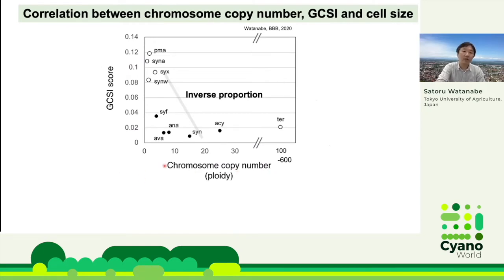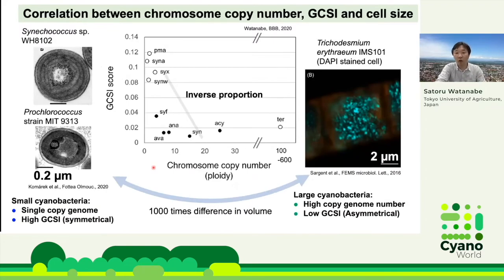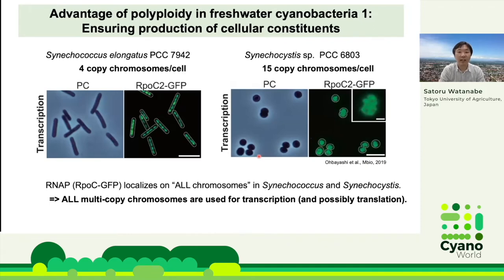The strength of GC skew can be expressed as the GC skew index, GCSI. I show the GCSI values in genomic circles. Higher GCSI values indicate a more symmetrical genome; conversely, lower GCSI values indicate an asymmetric genome. Comparing to marine picocyanobacteria, the GCSI is lower in freshwater cyanobacteria, indicating their genome is not symmetrical. The number of chromosomal copies seems to correlate with genome structure. Polyploidy of chromosomes is also related to cell size — Trichodesmium, with a volume more than 1,000 times greater than picocyanobacteria, has an unusually high copy number of 100 to 600 copies per cell.